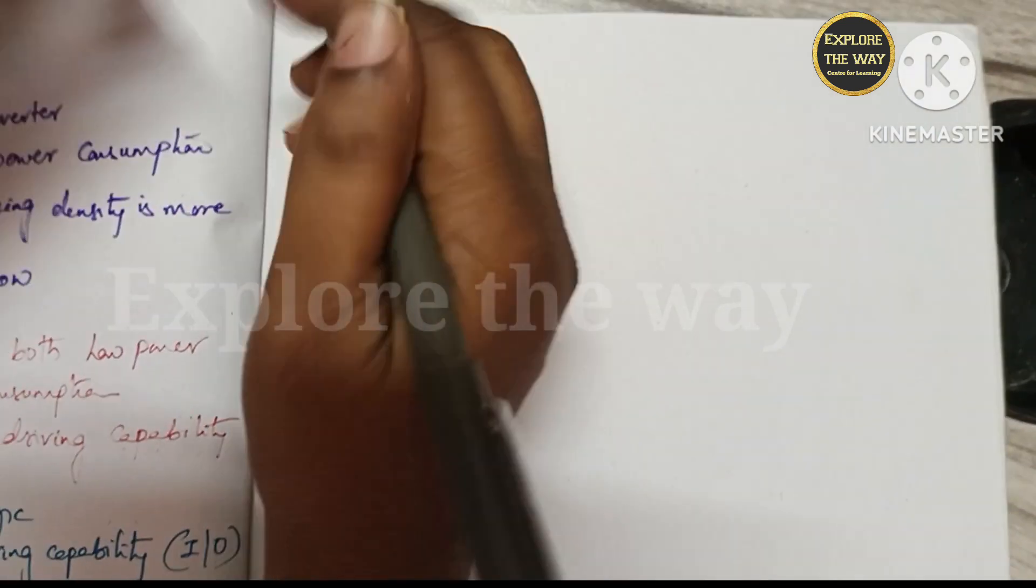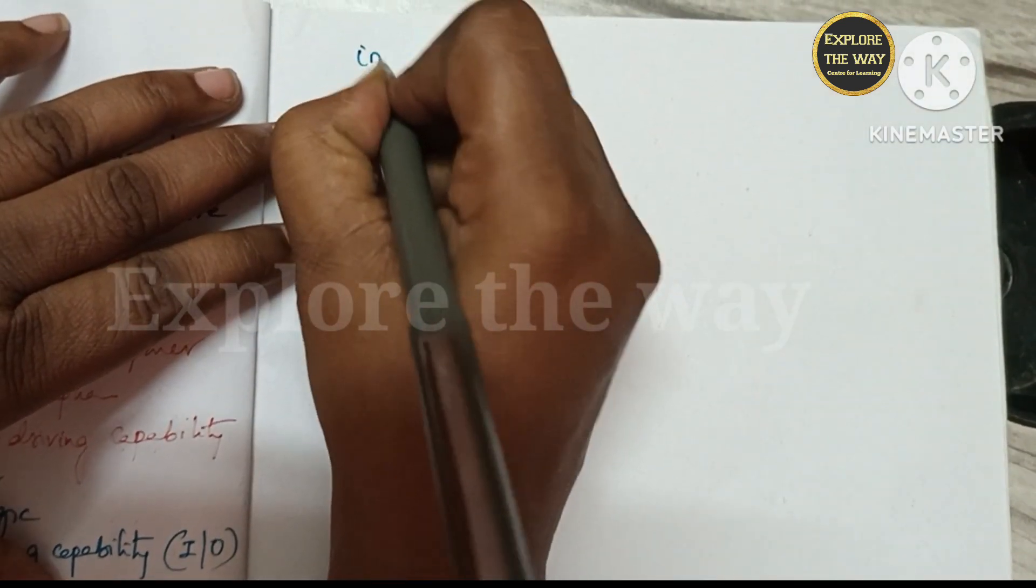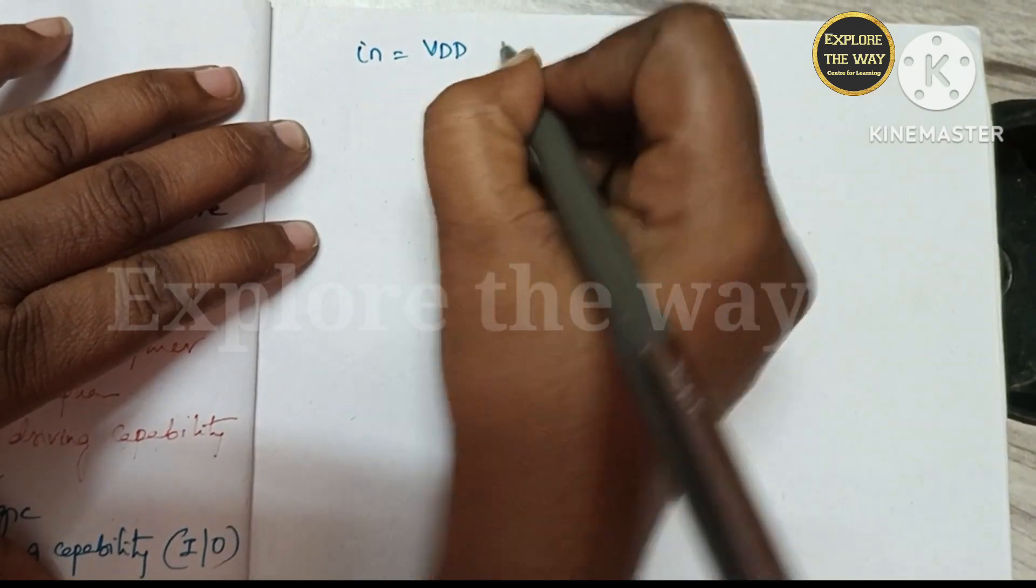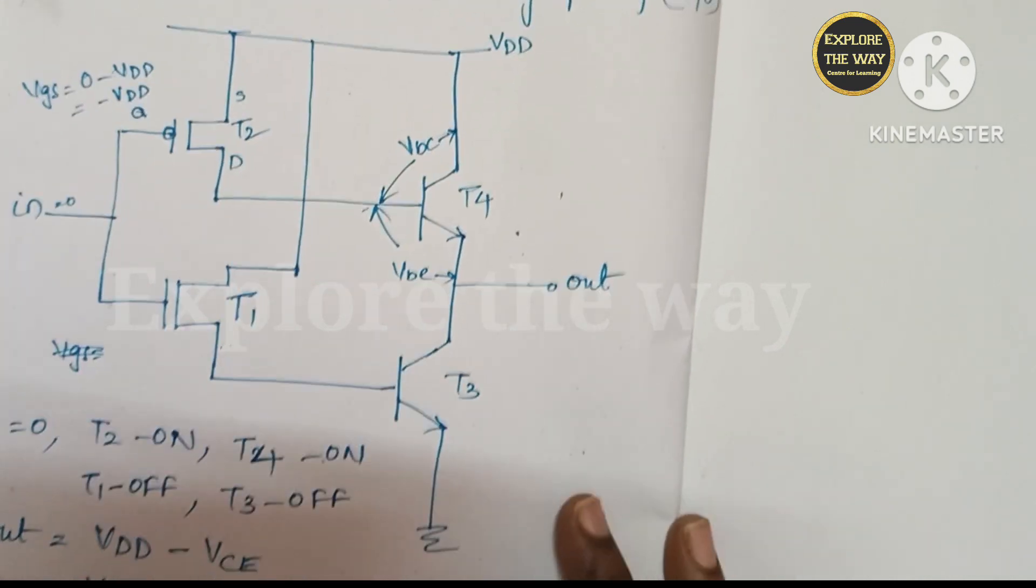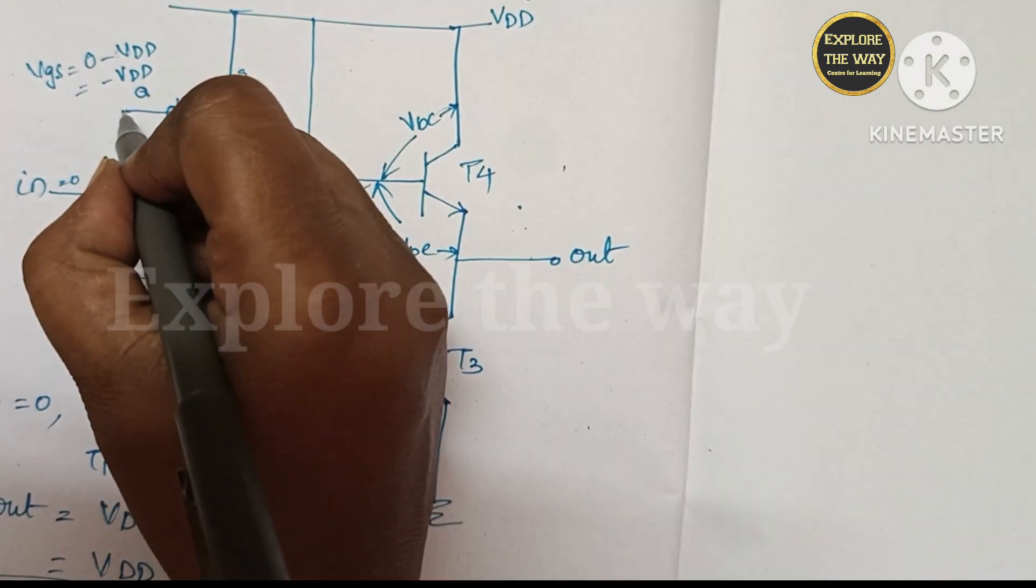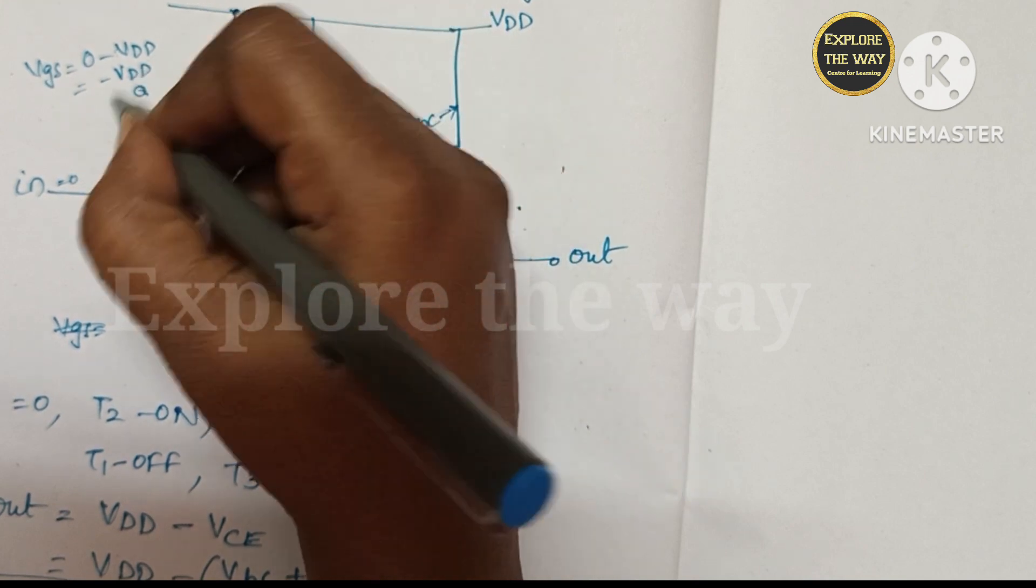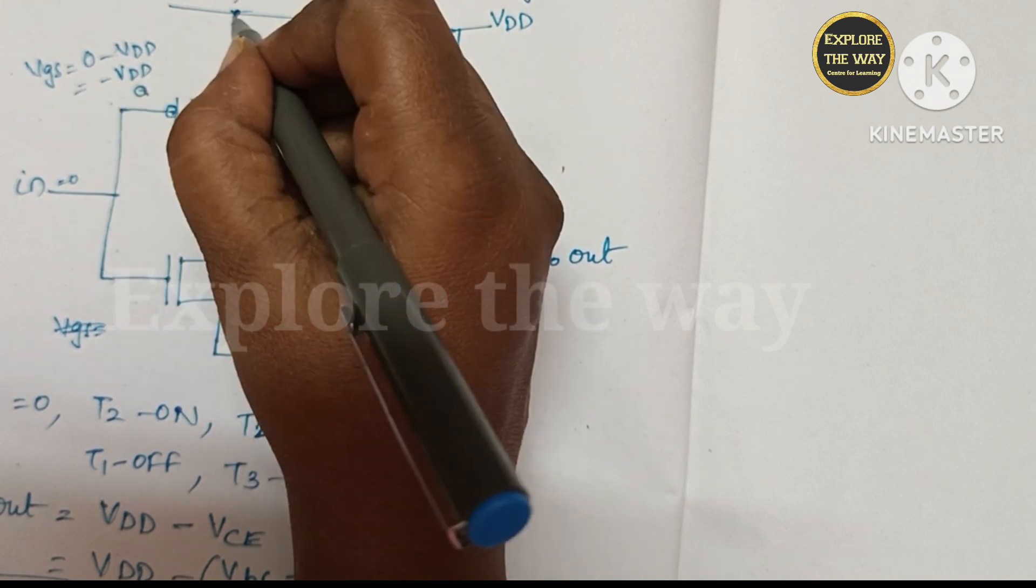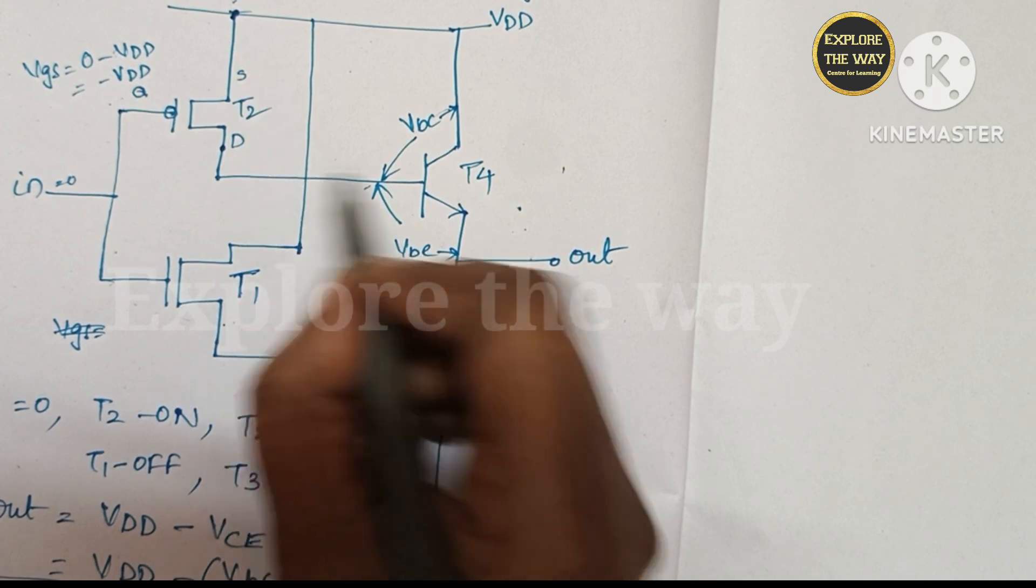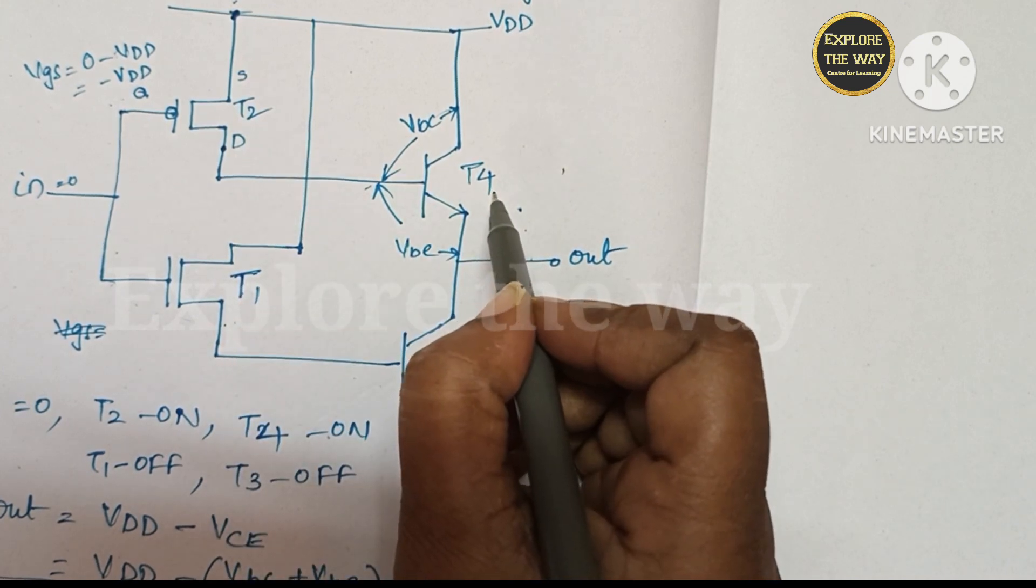Coming to the next case, when the input equal to VDD or high, then what happens? In this diagram, the gate is at VDD. Source is also at VDD. So here the difference VGS is 0. Here T2 is turned off, thereby T4 also turn off.